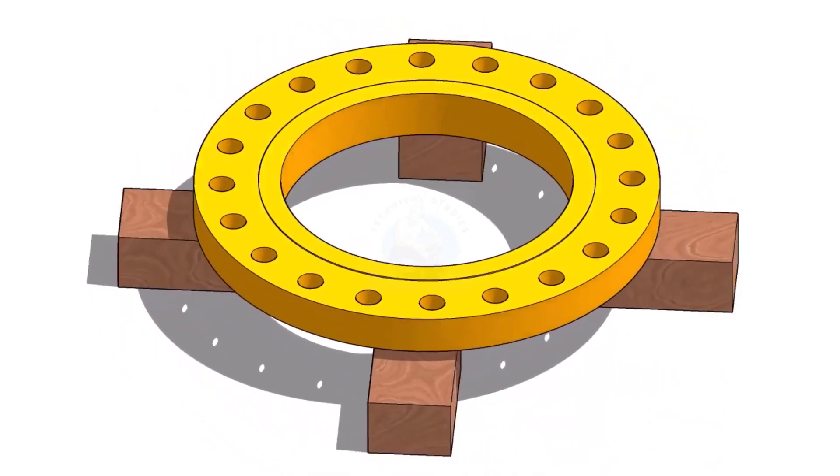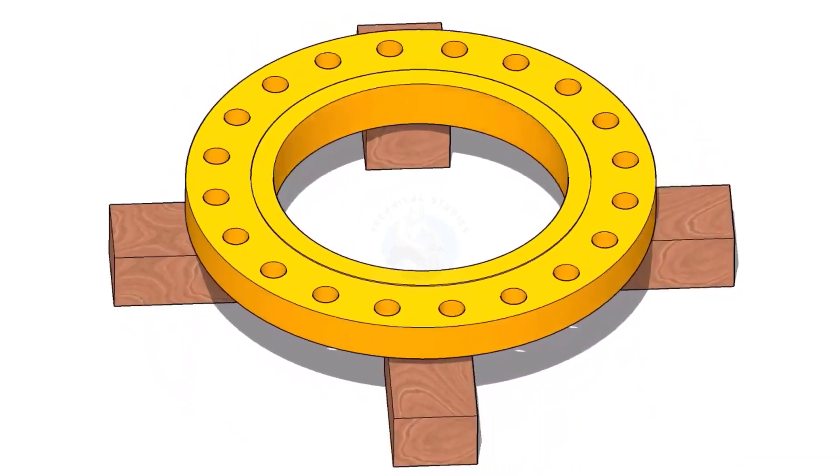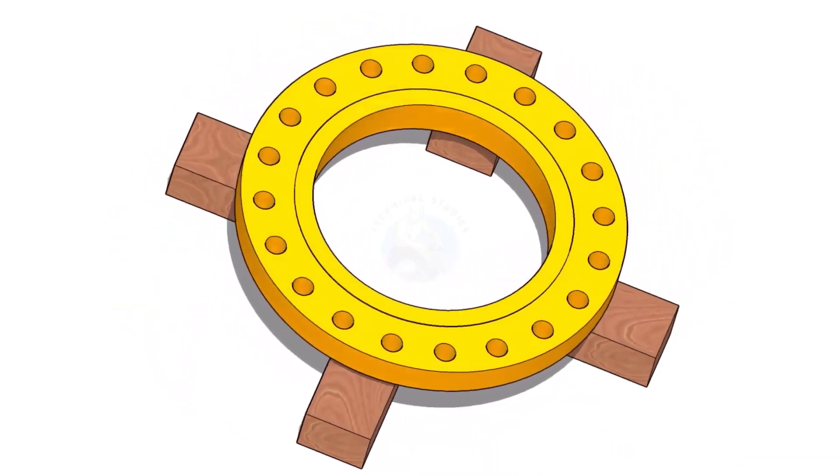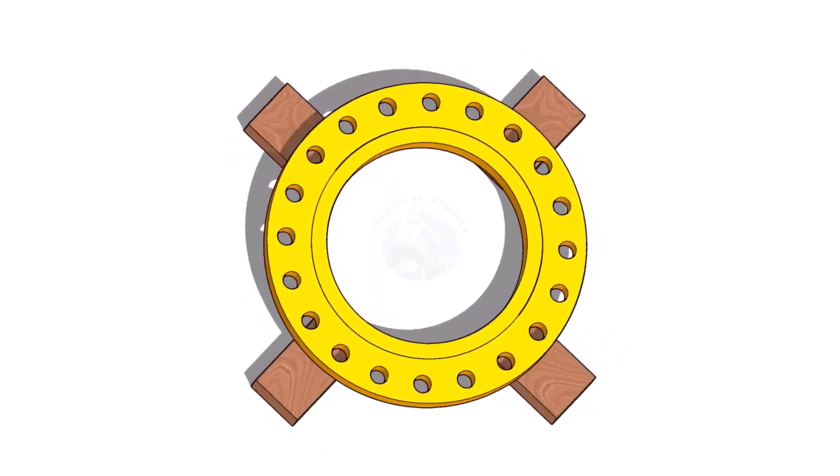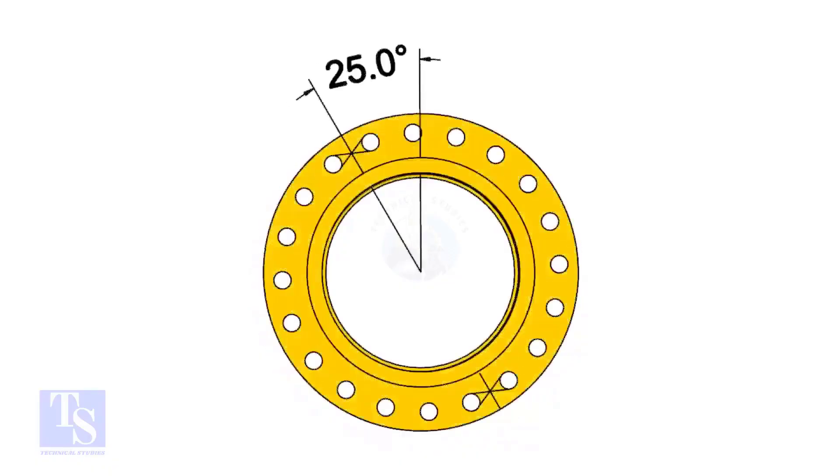I choose a slip-on flange for the example, but the calculation and the procedure are same for all flanges. The pipe and the flange size is 16 inch, and the flange will rotate 25 degrees anti-clockwise. Hope you all know the difference between clockwise and anti-clockwise rotation.